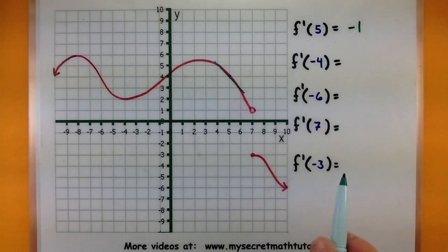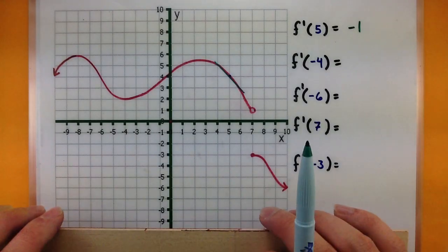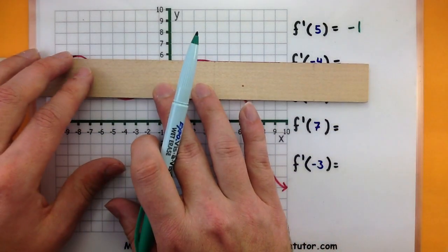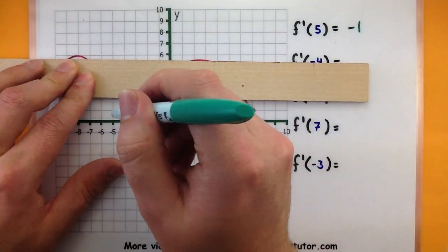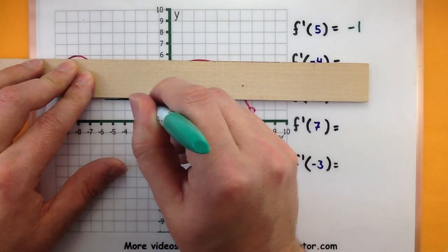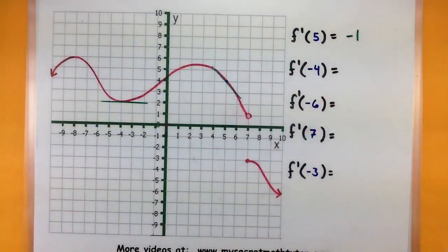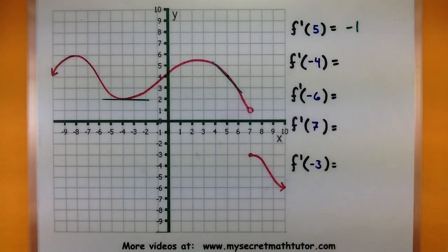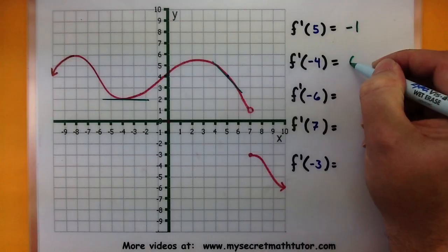All right now let's try this at negative 4. Notice how that's right at the bottom of that little divot there. If I was to draw in a small little tangent line for that you can see that this one is completely horizontal. So it's not really going up it's not going down. So our derivative is zero.